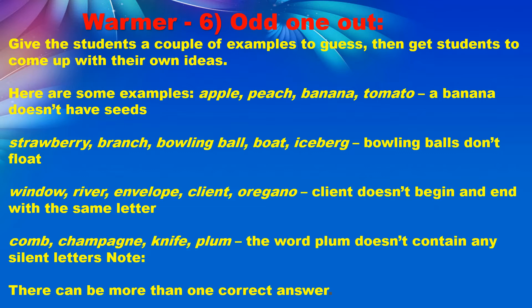Here are some examples. First: apple, peach, banana, tomato — the odd one out is banana, because a banana doesn't have seeds. Next: strawberry, ranch, bowling ball, boat, iceberg — the odd one is bowling ball, because bowling balls don't float. Another: window, river, envelope, client, oregano — the odd one is 'client', because it doesn't begin and end with the same letter.